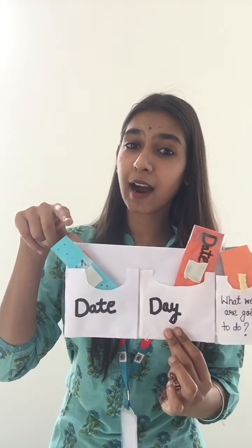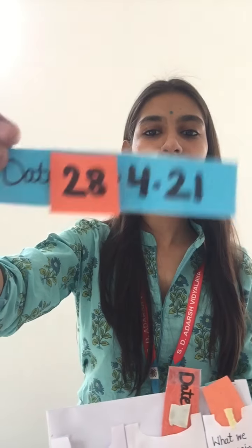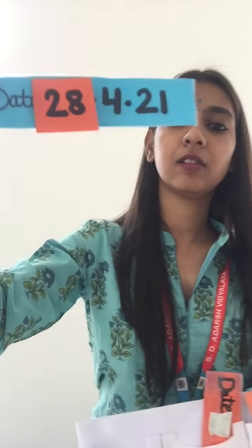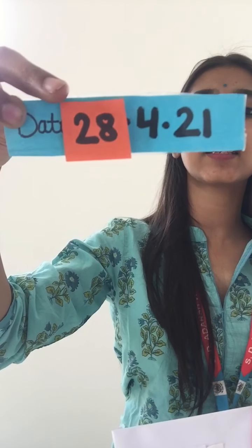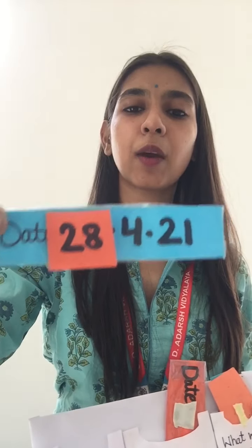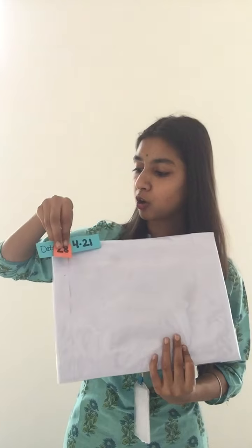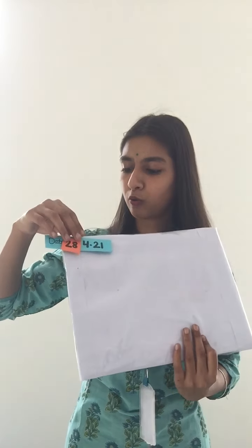First of all we will check our date. Who is going to check the date? I heard Kashish. So ma'am will pick up the date for Kashish. What's the date? Look carefully — today is 28 April 2021. Today's date is 28 April 2021. So now we will paste it on our board at the top side.